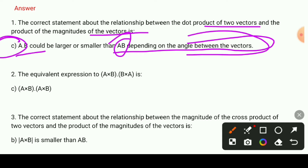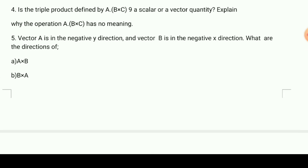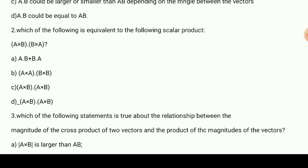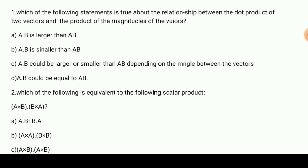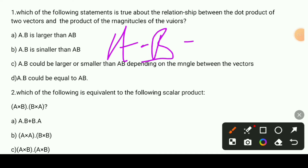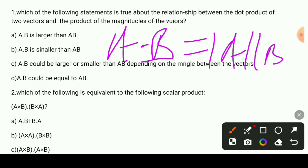The dot product formula is: a·b equals the magnitude of a times the magnitude of b times cosine of theta. So the value of a·b depends on cosine theta. The angle is the key factor.